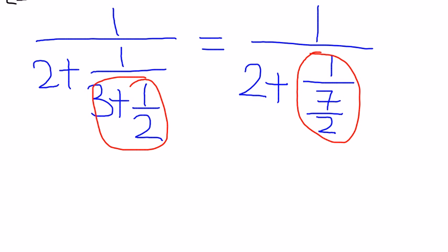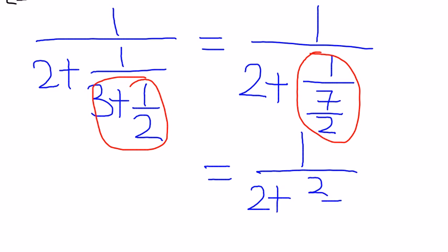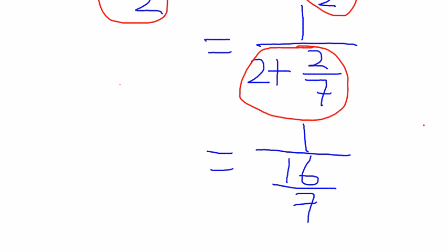The trick is that you need to focus on whatever happens in the bottom right-hand corner. I believe you know how to simplify this form — it becomes 2 plus 2 over 7. And the next step, you need to focus on the red box right here to get 1 over 16 over 7. And obviously you can simplify it at the final step — the answer is 7 over 16 as the final answer.